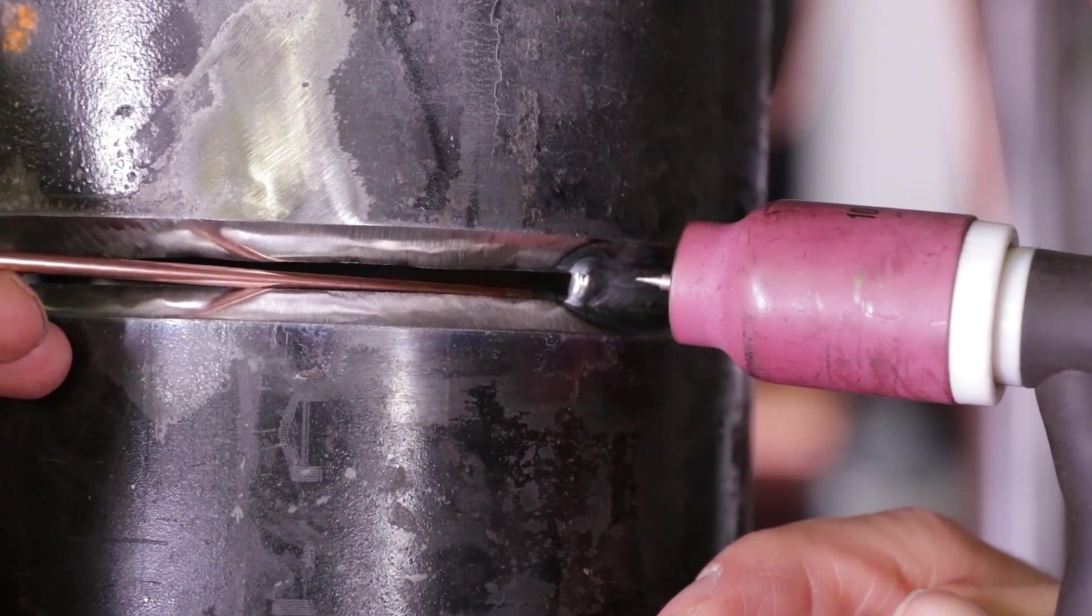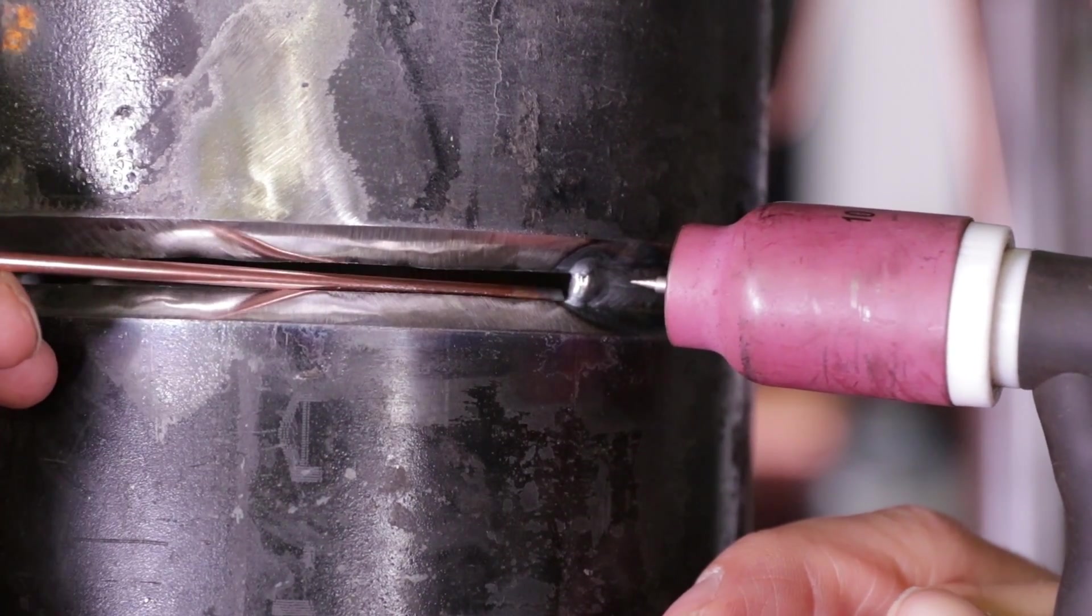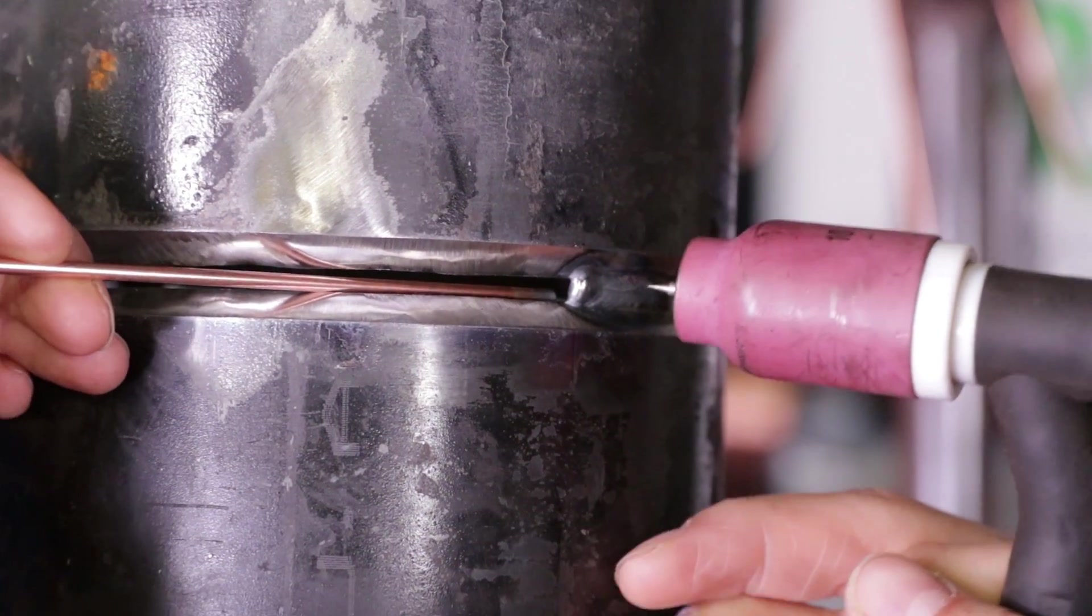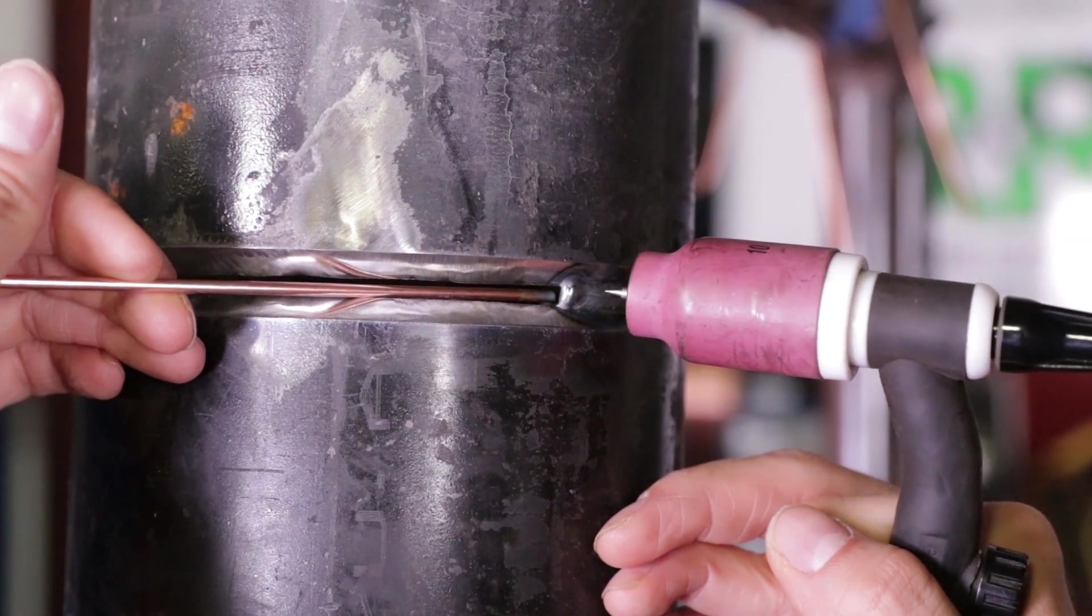Now, back to our question. How much rod do I feed while taking the root pass? The answer to that is just enough to keep the rod connected to the puddle.